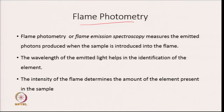The first technique based on atomic spectroscopy is flame photometry, also known as flame emission spectroscopy. It measures emitted photons produced when a sample is introduced into a flame. The wavelength of emitted light is unique for each atom, aiding in elemental identification, and the intensity at lambda max determines the amount of the element present.